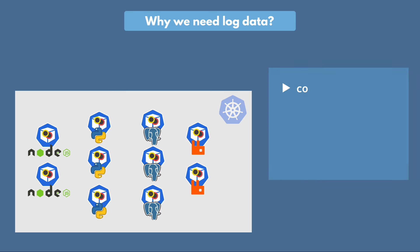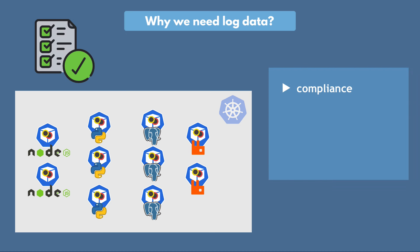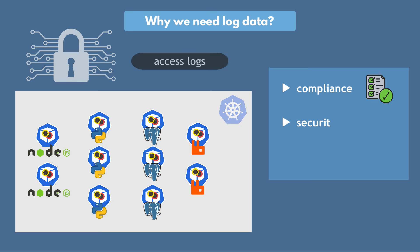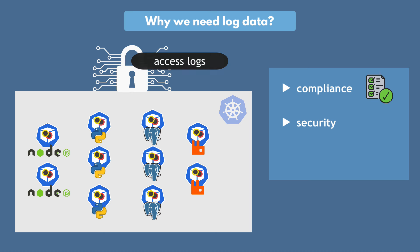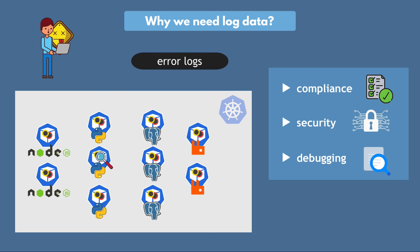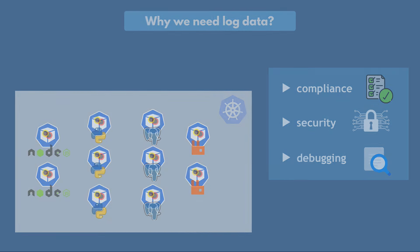What are some of the information these applications are logging and why do we need this log data? This may be some compliance data — for example, if you're required to log some specific information depending on your industry in order to be compliant. It could be for application security, to detect suspicious requests by logging all access attempts with IP address and user ID, or to log who is accessing what and when. And an obvious usage for log data is debugging your application when there is an error, analyzing all application logs to find the cause.